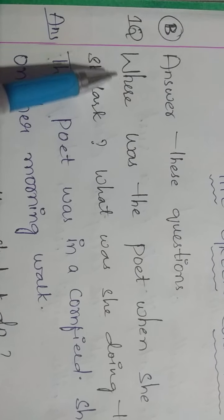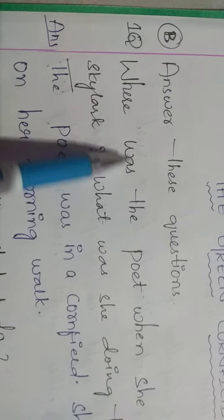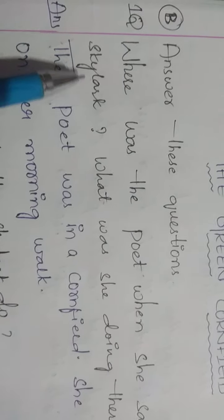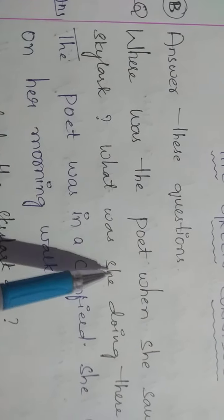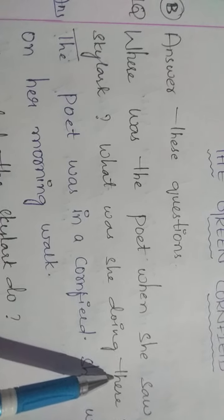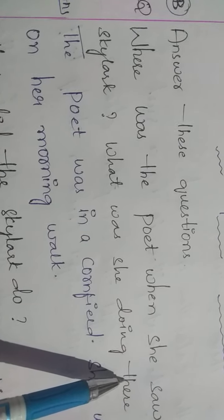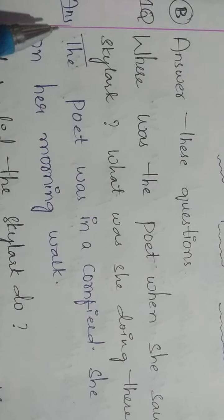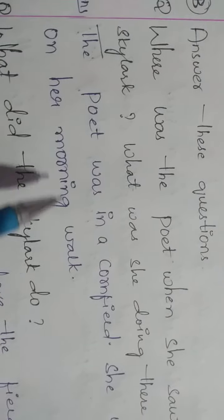First question: Where was the poet when she saw the skylark? What was she doing there? This is your first question, now see the answer. The poet was in a cornfield, she was on her morning walk. This is the first answer.